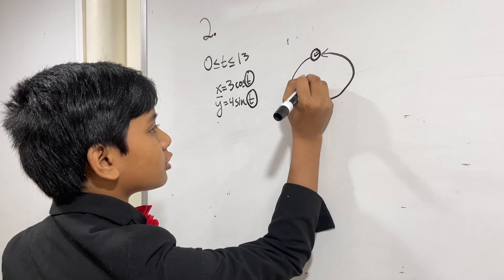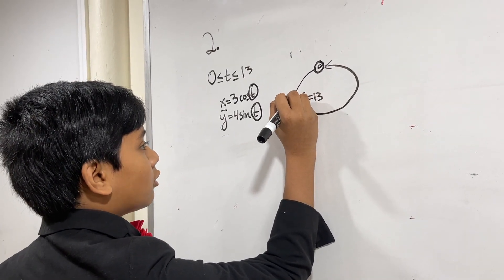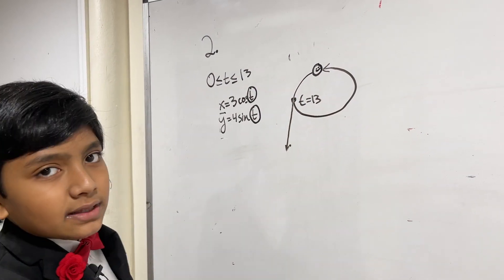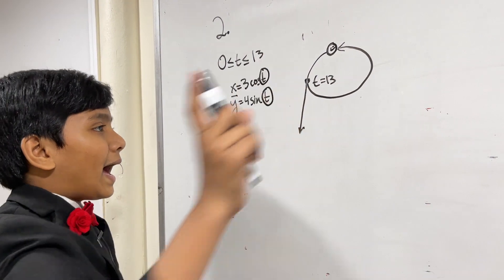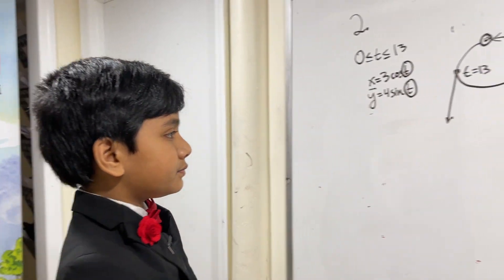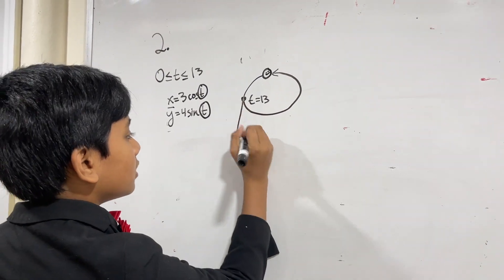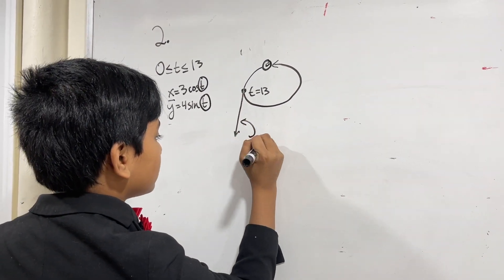But eventually, at t equals 13, our particle buddy decides to go out of the path and instead leaves on the tangent line of the curve at t equals 13. What we're trying to find is the slope of the line that the particle leaves on.